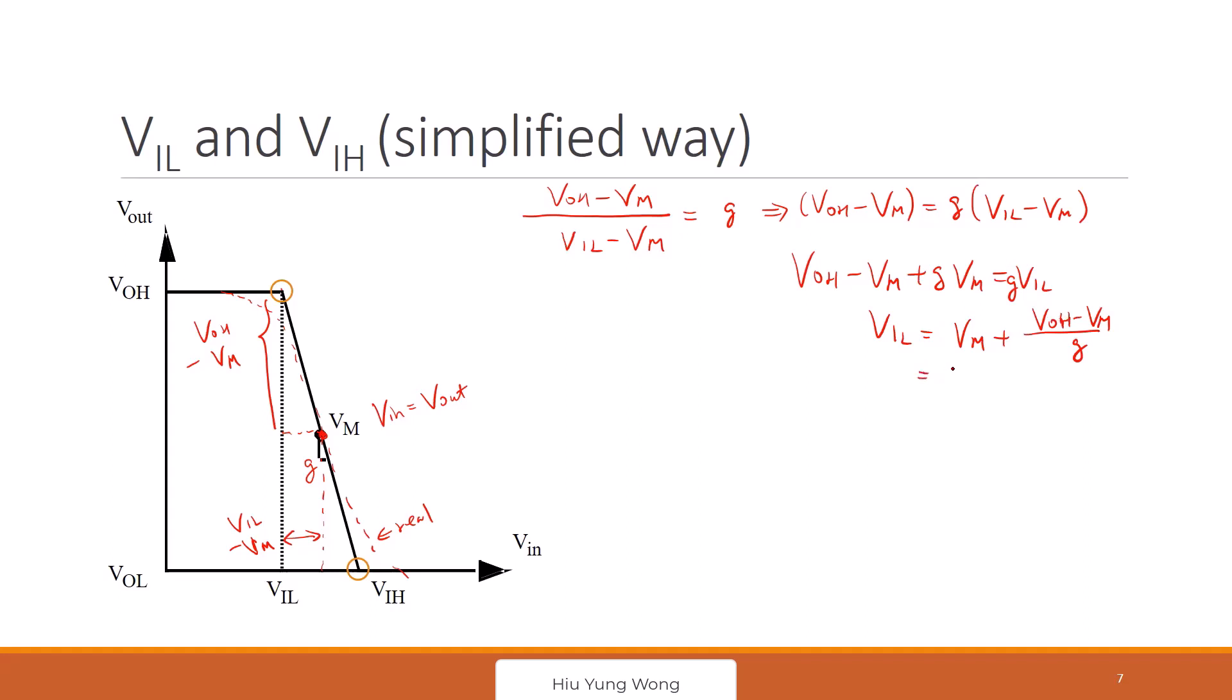In my cheat sheet, I actually use another sign. I use Vm minus Voh divided by G, negative. It's just the same. I just take out the negative sign. Any questions?